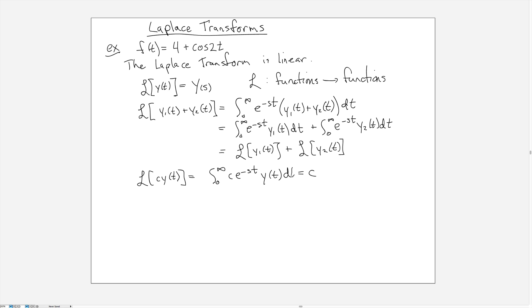That means that we can pull it out of the integral sign and write it as c times the integral e to the minus st, y(t) dt. And that now tells us that c times a function transformed is the same as c times the transform of the function y.